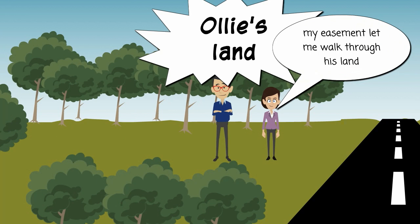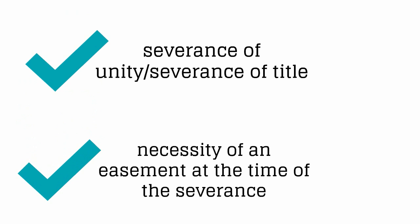In an easement by necessity, first, we need severance of unity, or severance of title, which we'll explain in a moment, and also a necessity for the easement at the time of the severance, which we'll also explain.